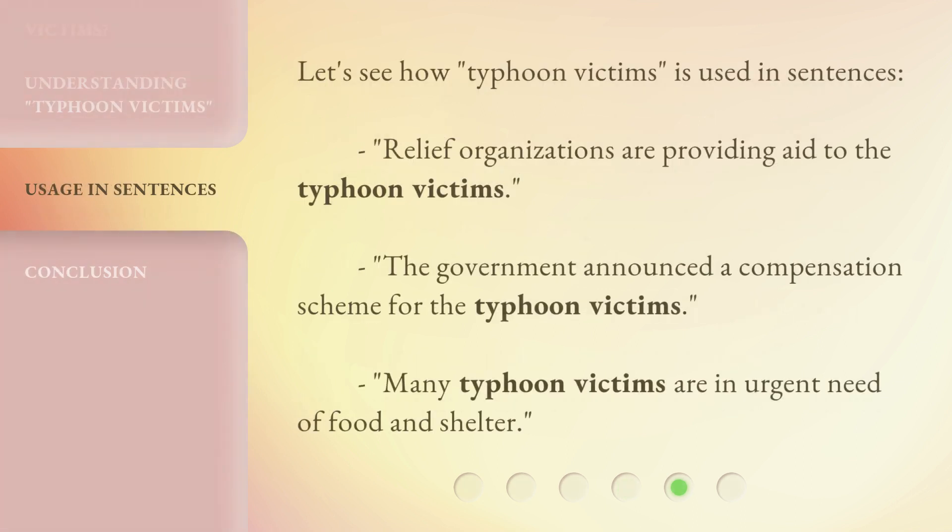Let's see how 'typhoon victims' is used in sentences. Relief organizations are providing aid to the typhoon victims. The government announced a compensation scheme for the typhoon victims. Many typhoon victims are in urgent need of food and shelter.